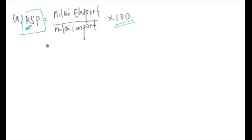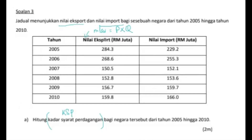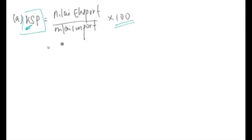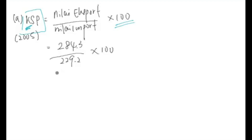Jadi sekarang kita akan gantikan maklumat yang telah sedia ada dalam jadual ini. Kalau katakan untuk tahun 2005, nilai ekspor dia 284.3, nilai import 229.2. Kita terus gantikan. KSP yang kita tengah kirakan adalah untuk tahun 2005. Berdasarkan pengkiraan yang telah ditunjukkan ini, jawapan yang anda dapat ialah 124.0.